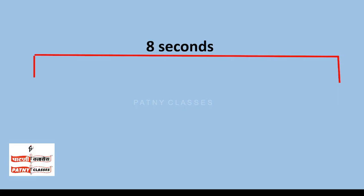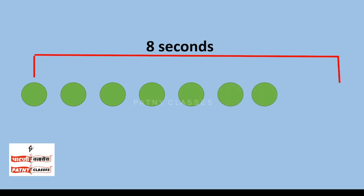Now I am going to explain the meaning of period. Consider 9 coins: the first coin is flipping, the second through eighth coins are not flipping, but the ninth coin is again flipping. So the same kind of motion is repeated after a particular time — let's say 8 seconds. That means after 8 seconds the same kind of vibration is repeated. The time required to repeat the same type of vibration in wave motion is called the period of vibration, or period of motion.